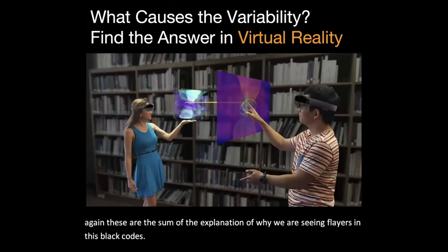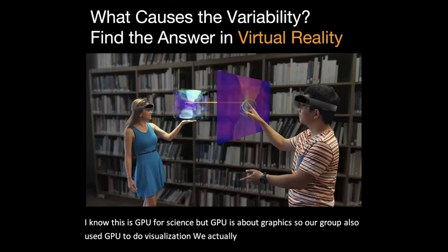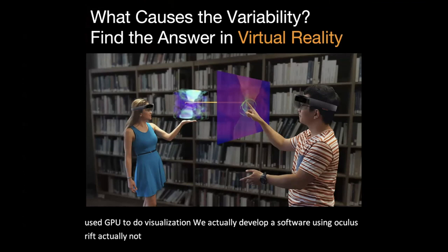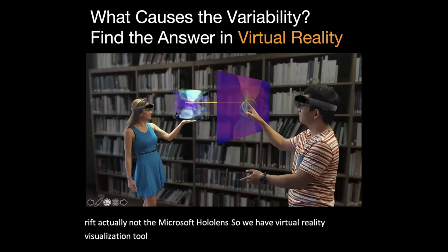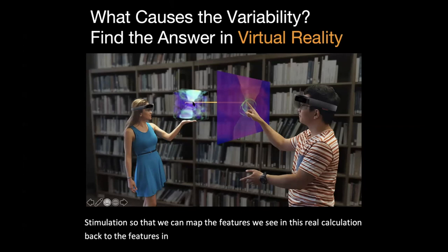Okay, so I know this is GPU for science, but GPU is about graphics. So our group also uses GPU to do visualization. We actually develop a software using Oculus Rift, actually now the Microsoft HoloLens. So we have a virtual reality visualization tool to overlay this GRMHD simulation and the GRRT simulation, so that we can map the features we see in this calculation back to the features in the GRMHD simulation. So that is very helpful in understanding what's going on in these calculations.